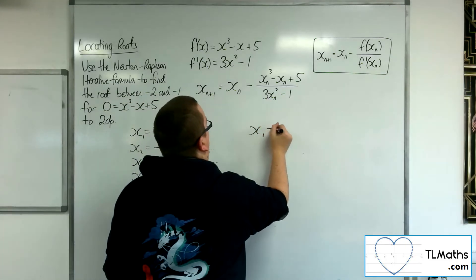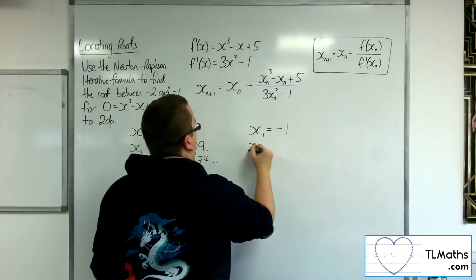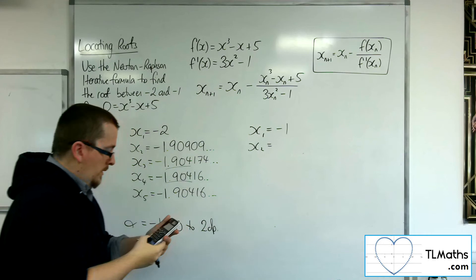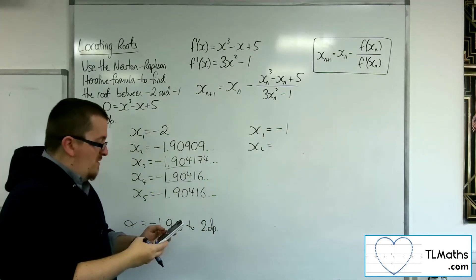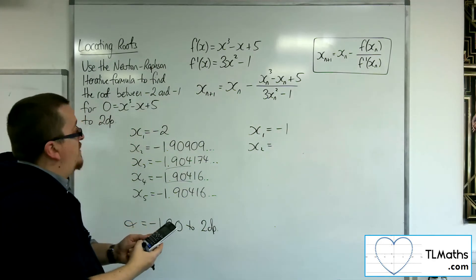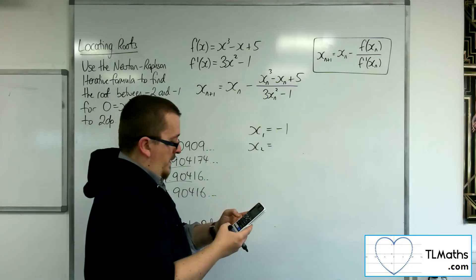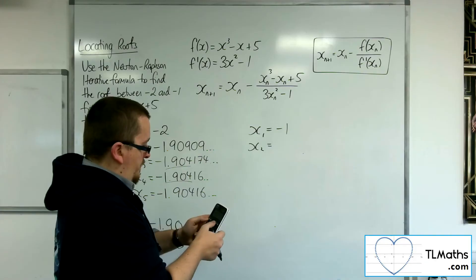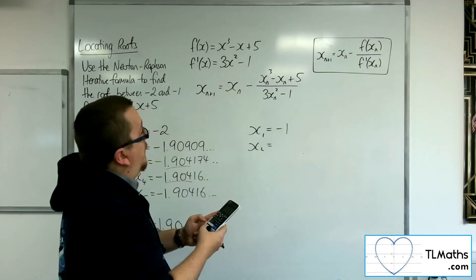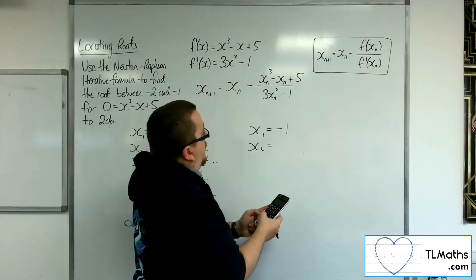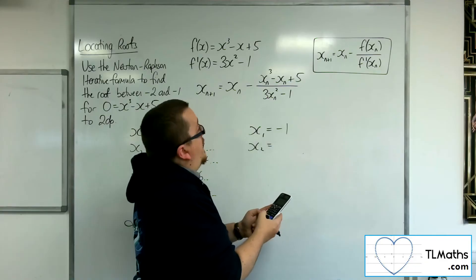Let's have a look what happens when we start at -1. I'm going to have to go back and retype this. So -1, press the equals sign. So answer, take away, open fraction, answer cubed, take away the answer, plus 5, divided by 3 lots of the answer squared, take away 1.